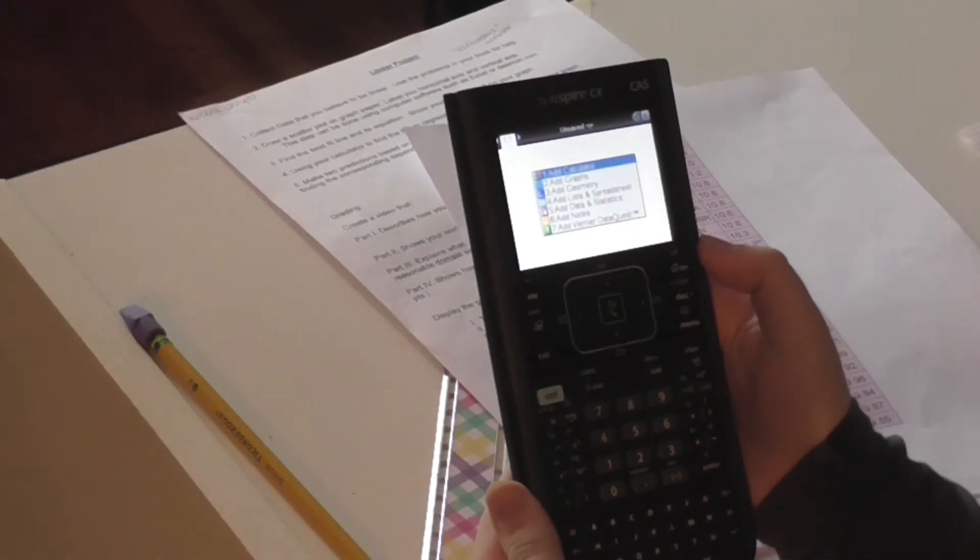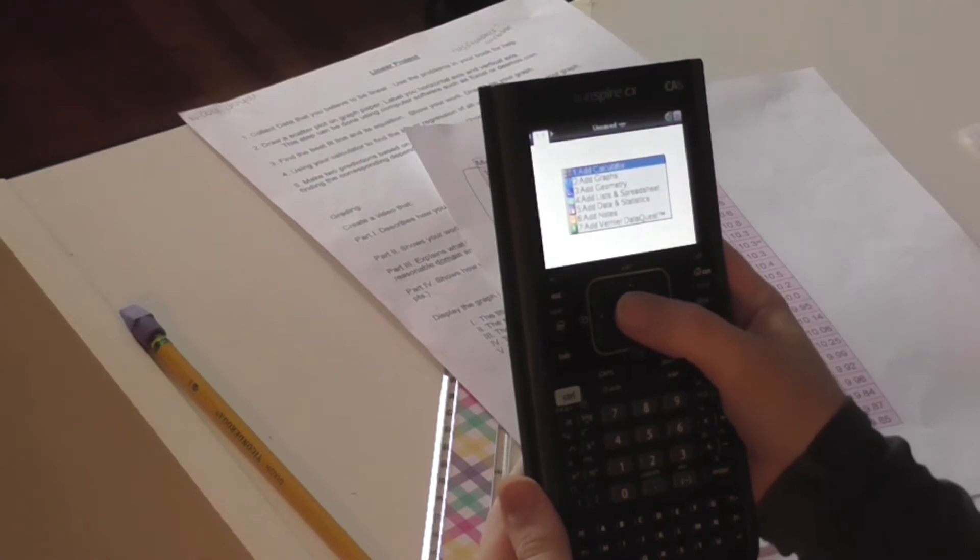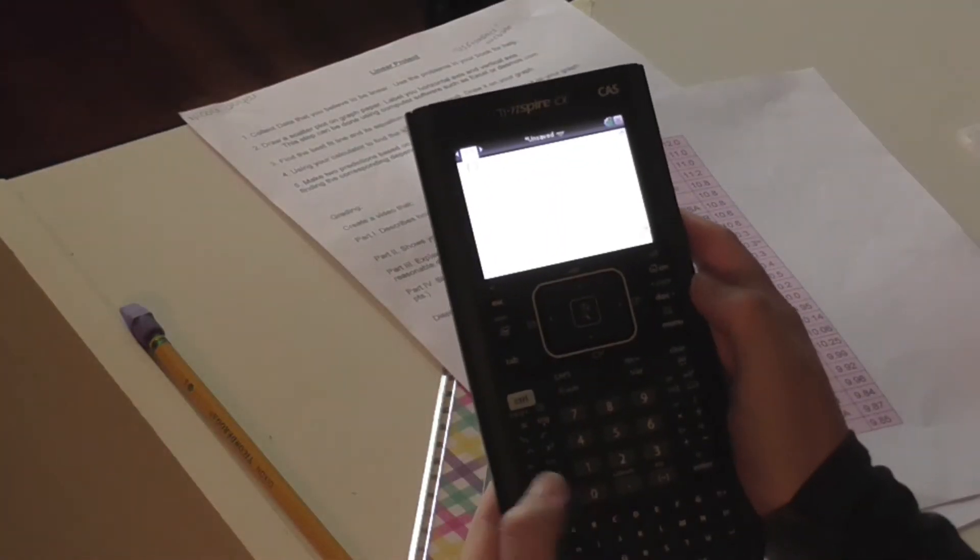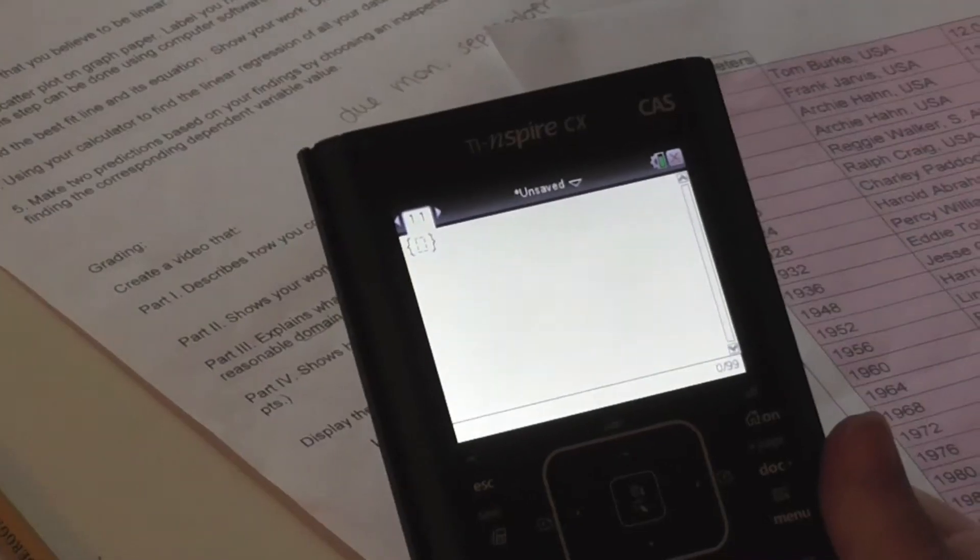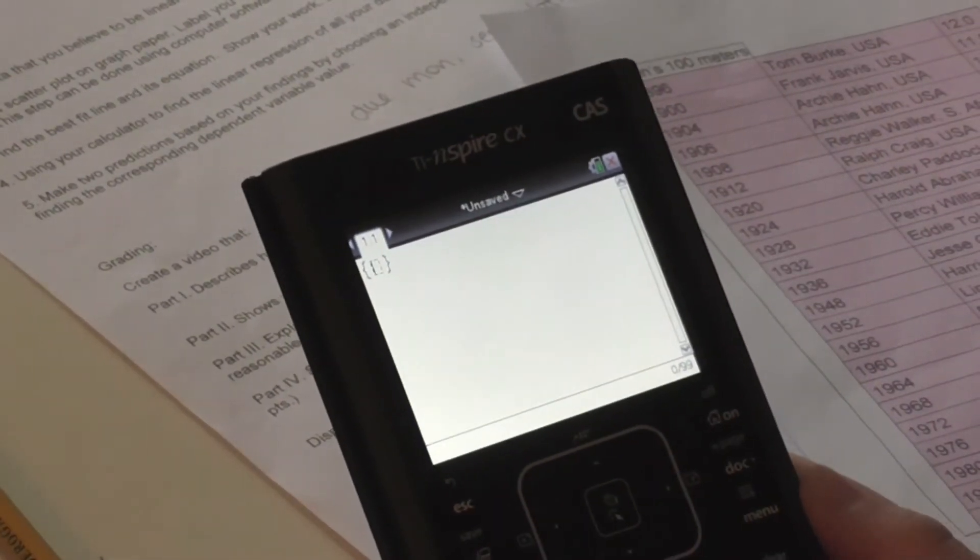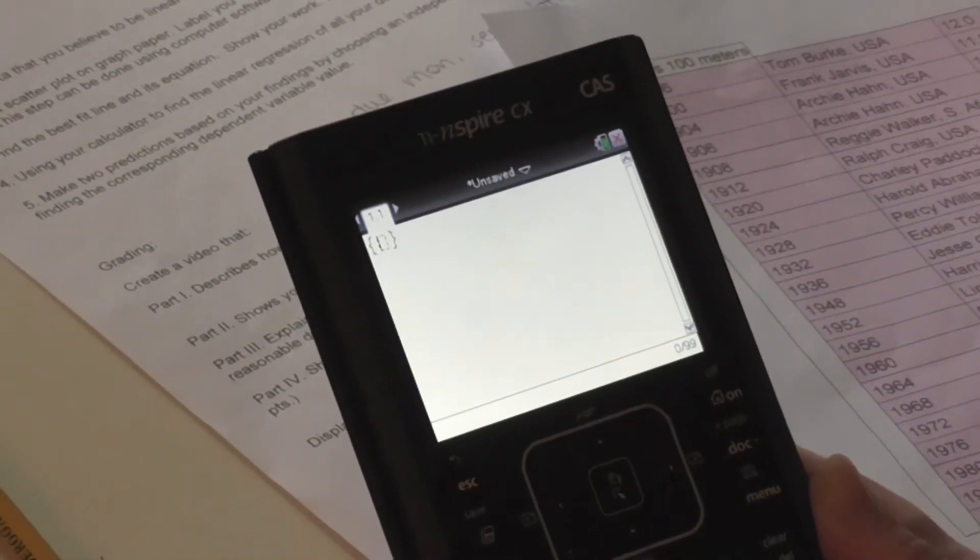The first thing you want to do to find the linear regression is to add a calculator page. Hit control right parenthesis, that way you can get your bracket set. The next thing you're going to want to do is to list all of your x values with commas in between them.